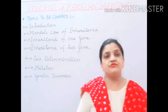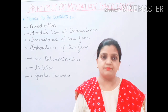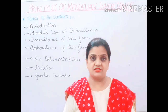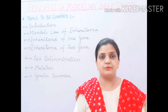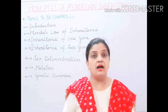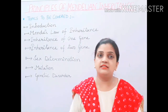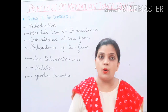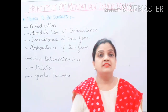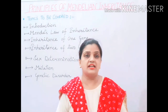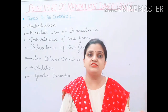Children, till now we have finished unit one on reproduction, where we completed four chapters related to reproduction and came to know how asexual and sexual reproduction takes place. Now in this chapter, the important thing we are going to study is how characters are transferred from the parent to the next generation.